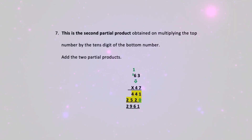Step 7: this is the second partial product, obtained by multiplying the top number by the tens digit of the bottom number. Add the two partial products together to get the final answer of two thousand nine hundred and sixty-one.